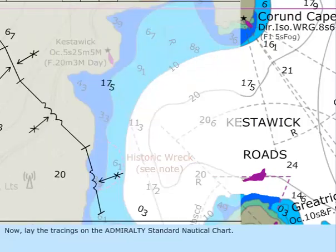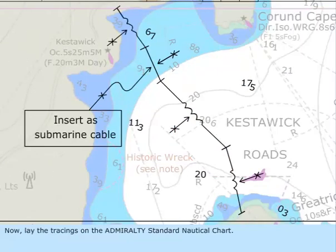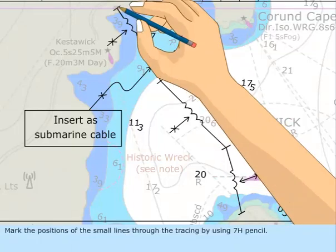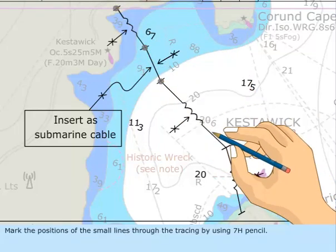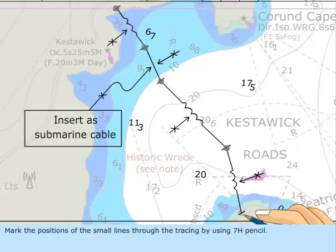Now, lay the tracing on the Admiralty Standard nautical chart. Mark the positions of the small lines through the tracing by using a 7H pencil.